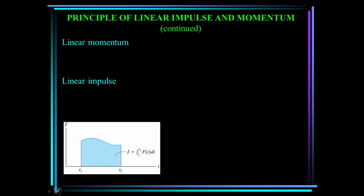Let's define linear momentum. We denote it by L, and it's a vector, so I'll put a bar over it, and it's equal to the mass times the velocity, which is also a vector. This vector has the same direction as v, the velocity, and it has units of kilogram meters per second, or slug foot per second.